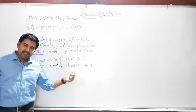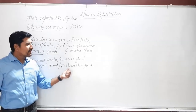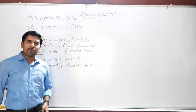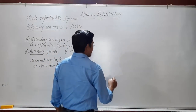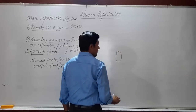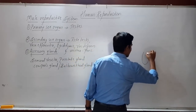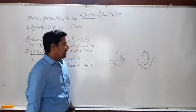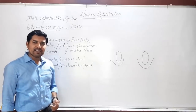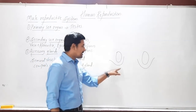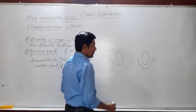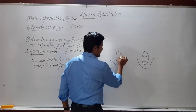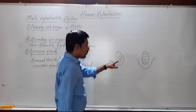Cowper's gland is called the bulbourethral gland — we can see this in the diagrammatic representation of the male reproductive system. In the diagram, the primary sex organs are a pair of testes, present in the lower abdomen outside the body in a sac called the scrotal sac, which is a skin fold. These testes have various compartments also called testicular lobules, and inside the testes we have certain tubules.